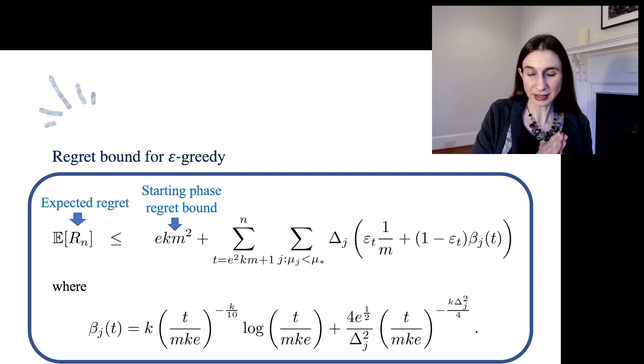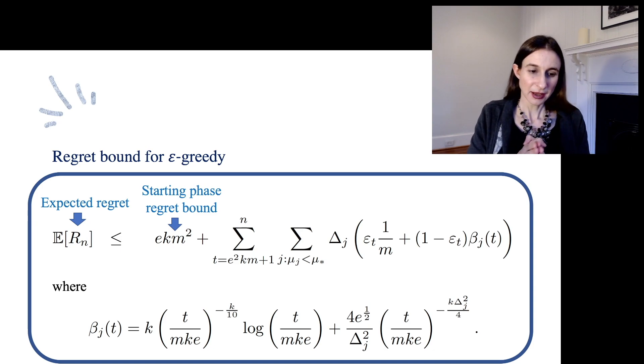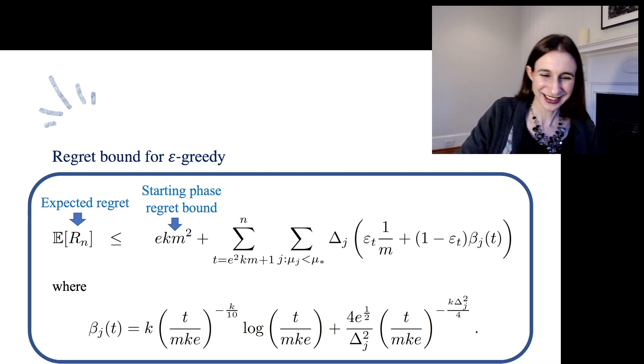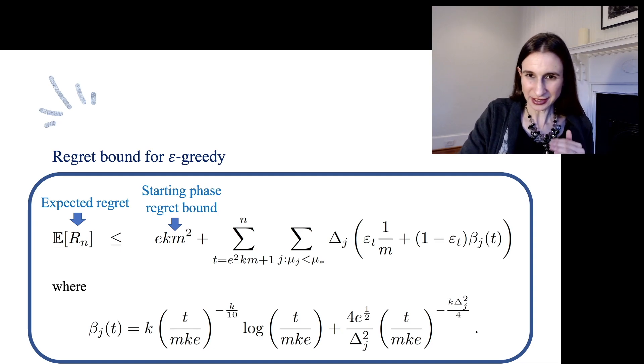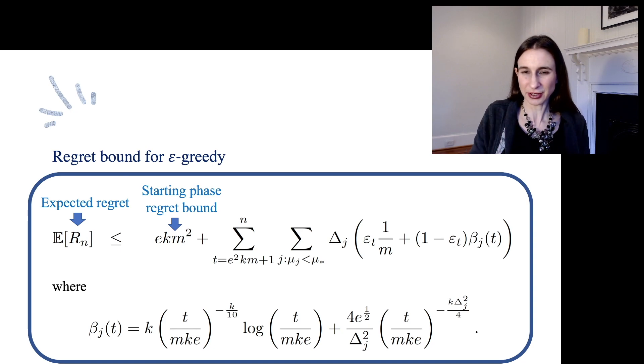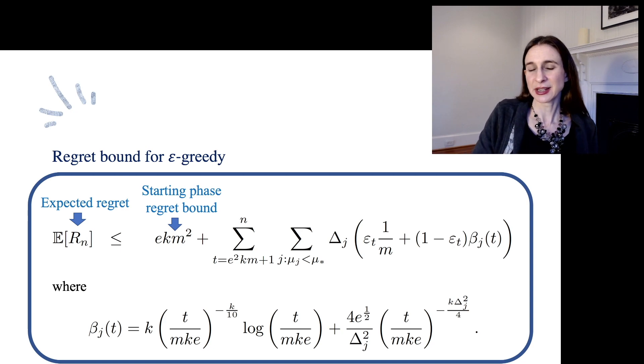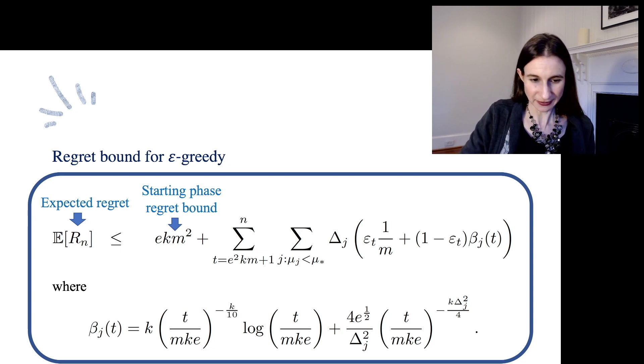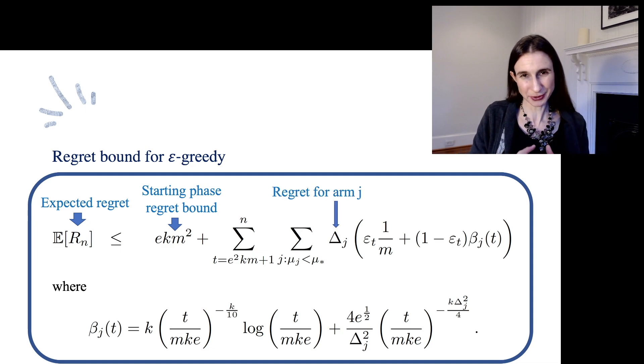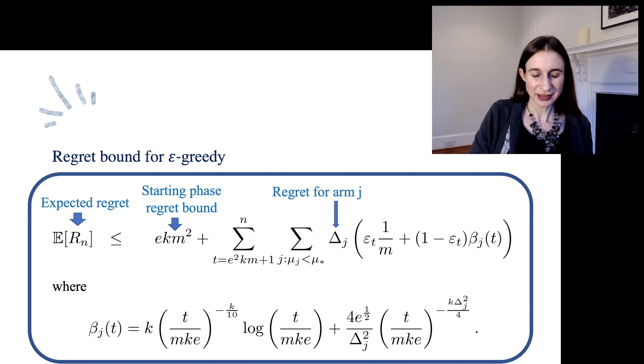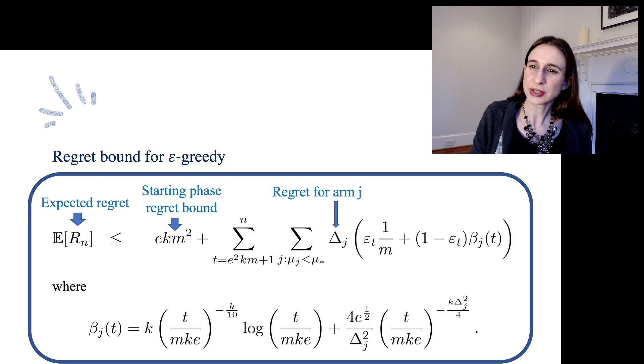Now we have a sum over all times after the initial phase, and then we have a sum over all arms that are not arm star. So we're going to sum, and then it's going to be the regret for all of those times, and for choosing arm j rather than arm star. So there's regret for choosing arm j, and then we have to look at when we would choose arm j.